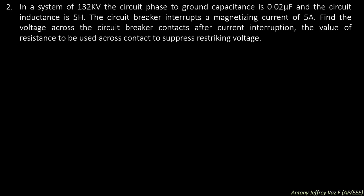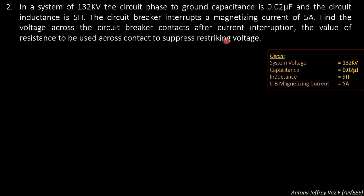Second question. In a system of 132 kV, the phase to ground capacitance is 0.02 microfarad, and the circuit inductance is 5 Henry. The circuit breaker interrupts a magnetizing current of 5 amperes. Find the voltage across the circuit breaker contacts after current interruption, and the value of resistance to suppress restriking voltage.